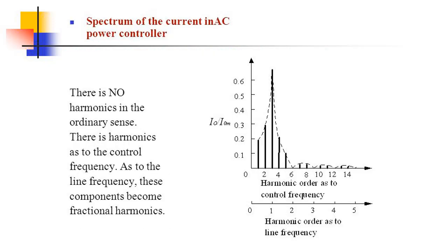Spectrum of the current in AC power controller: there is no harmonics in the ordinary sense. There is harmonics as to the control frequency. As to the line frequency, these components become fractional harmonics.